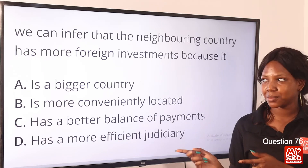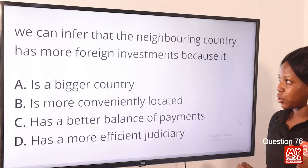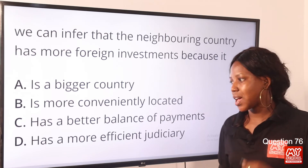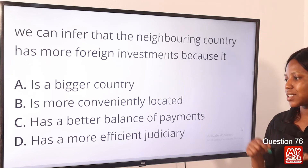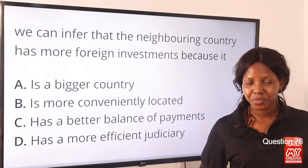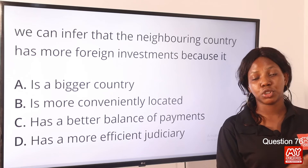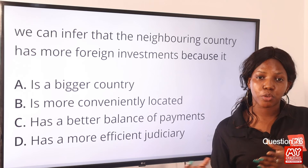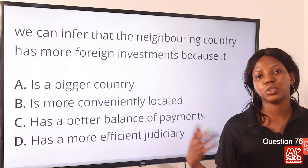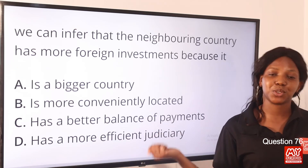Moving on to question 76. We can infer that the neighboring country has more foreign investment because it — option D — has a more efficient judiciary. Since a dysfunctional judicial system leads to a poor economy, a good judicial system promotes a good economy. Option D is the correct answer. If you have better solutions or explanations, please use the comment section below.